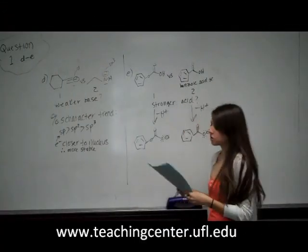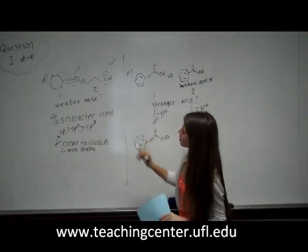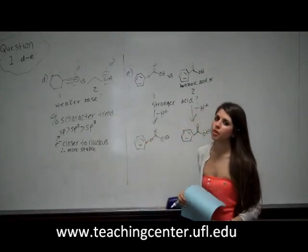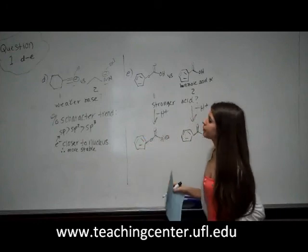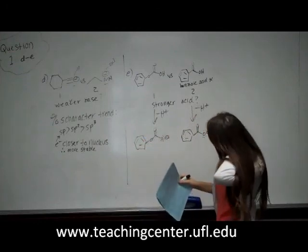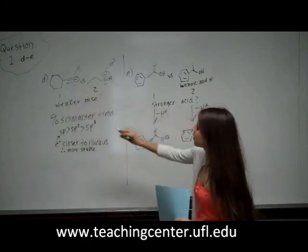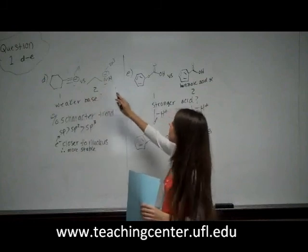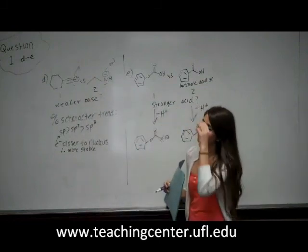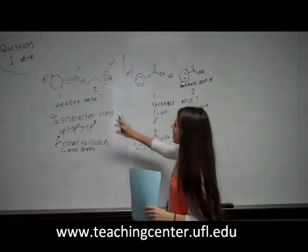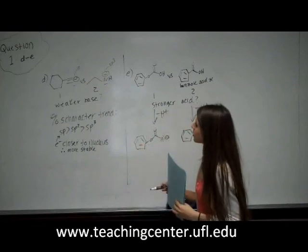For Part D of Question 1, we're looking for the weaker base. We leave our molecules as they are — we don't have to deprotonate when comparing bases. We look at the atom with the negative charge on them. Here we have a negative charge on carbon and a negative charge on nitrogen. Normally, we would say that nitrogen better stabilizes negative charge than carbon because it's more electronegative.